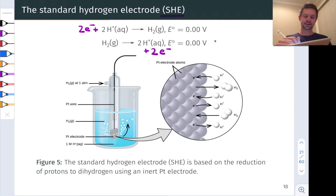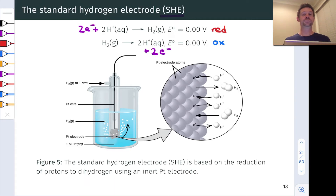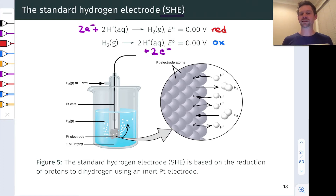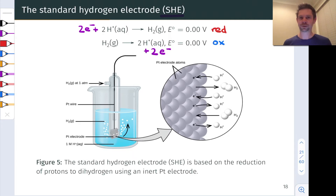So let's take note of that. This is an oxidation and this is a reduction, but because we are defining the potential of this half cell as zero, both of these processes are associated with a standard potential of zero.